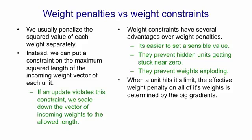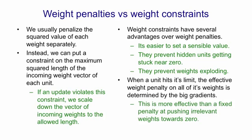In effect, if you think of it like a penalty, the penalty scales itself so as to be appropriate for the big weights and to suppress the small weights. This is much more effective than a fixed penalty at pushing irrelevant weights towards zero. For those of you who know about Lagrange multipliers, the penalties are then just the Lagrange multipliers required to keep the constraint satisfied.